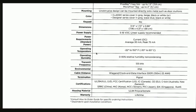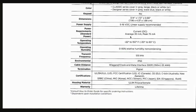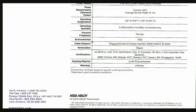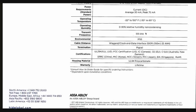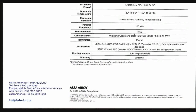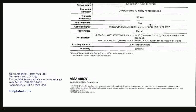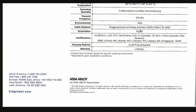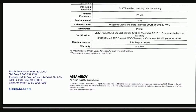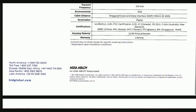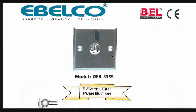The reader datasheet also covers power supply, power consumption, operating temperature, operating humidity, and transmit frequency. The ingress protection rating and cable distance are also listed — 150 meters for 22 AWG cable between the reader and the controller. Termination type, certifications, and warranty are also included.